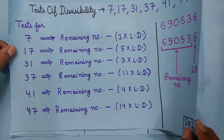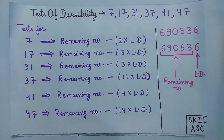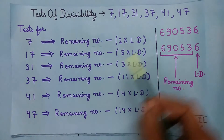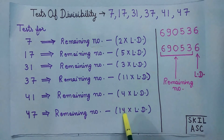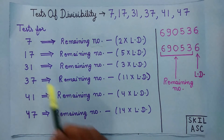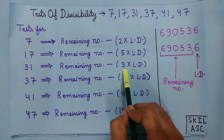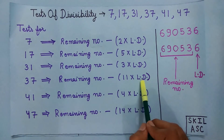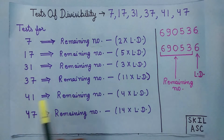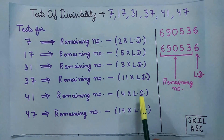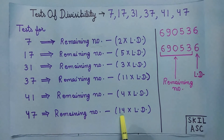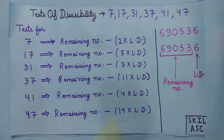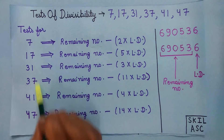For all these numbers the method is the same — only the multiplier changes. For 31, multiply the last digit by 3. For 37, multiply the last digit by 11. For 41, multiply the last digit by 4. To better understand this, let's take an example for each of these numbers.